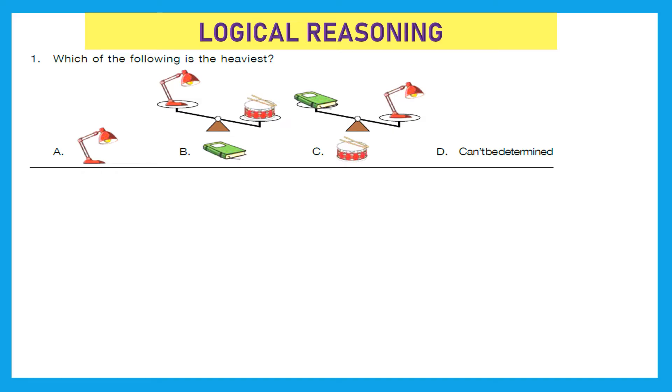Question 1: Which of the following is the heaviest? Here we have got two balance beams and three items. One thing about a balance beam is whichever side lowers down means that the item put on the lower side is heavy and the other one is lighter. In the first picture we can see that drum is heavier than lamb, and in the second picture we can see that lamb is heavier than book. What does it mean? It means drum is heavier than lamb, lamb is heavier than book, that means drum is the heaviest. Option C is the right answer.